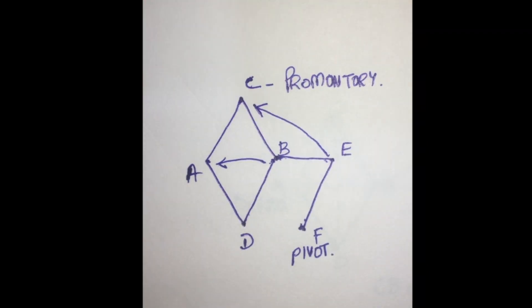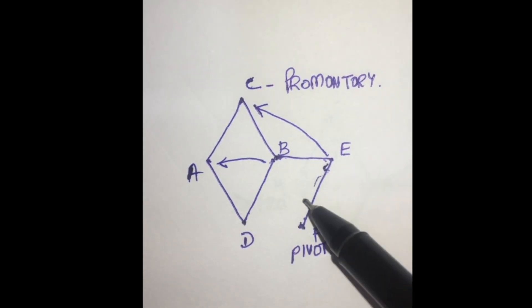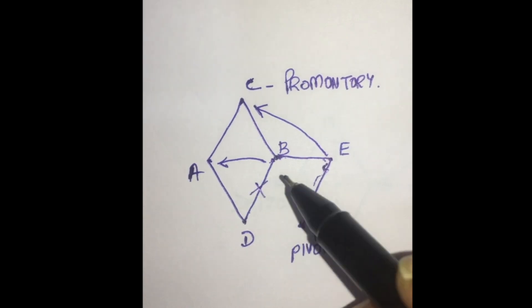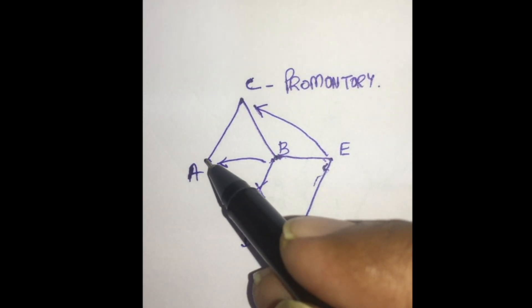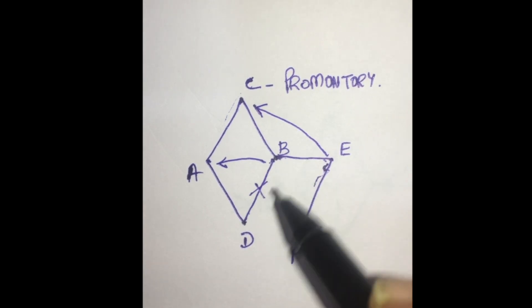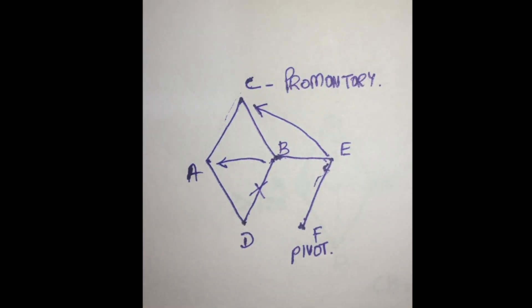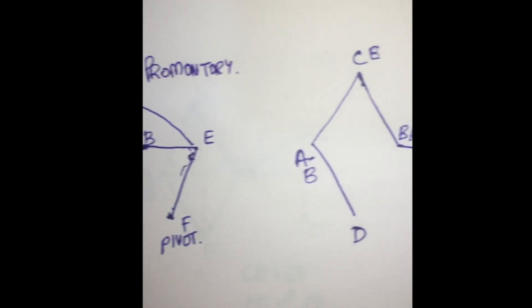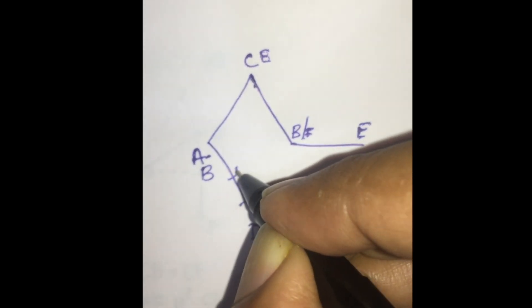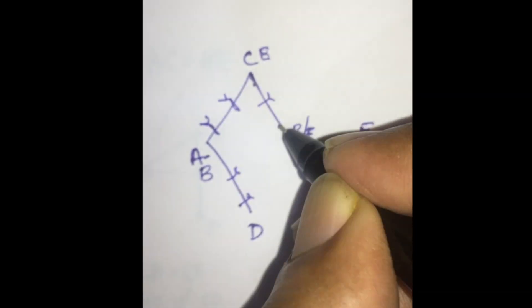What is the resulting suture line after raising and insetting the flap? The side adjacent to the flap is removed. The flap inset is done on three sides, and this is the leading edge of the flap. Once the flap is inset, point B is sutured to point A, point E is sutured to point C, and point F is sutured to point B.